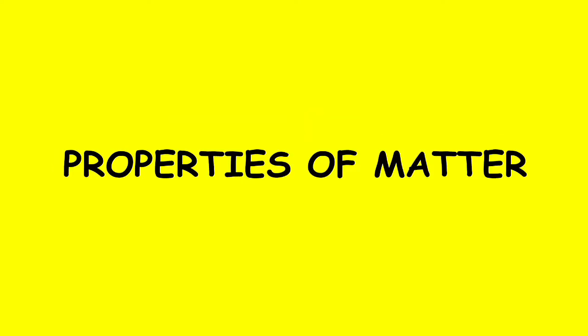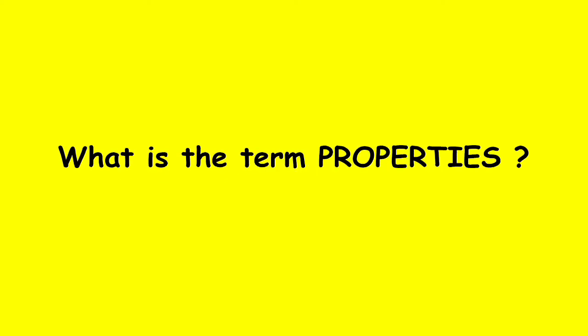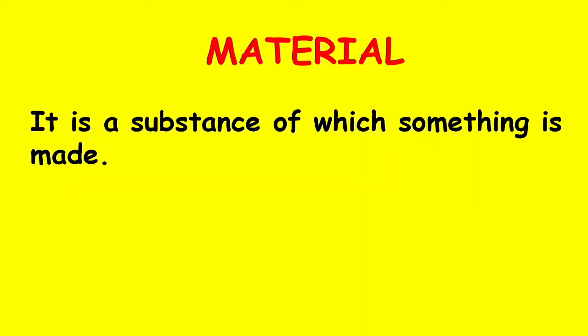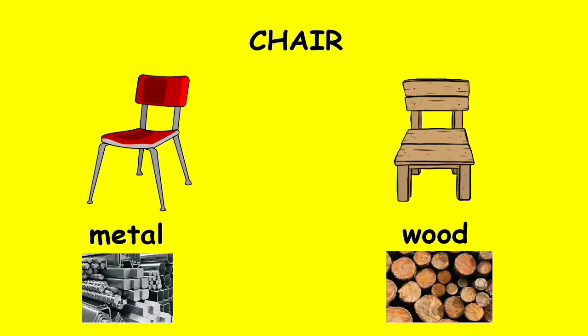Now let's talk about the properties of matter. Before that, what is the term properties? Properties are the external and internal characteristics of an object. This also guides you in identifying materials based on their appearance, taste, and shape. When we say material, it is a substance of which something is made. For example, a chair can be made from materials such as metal and wood.